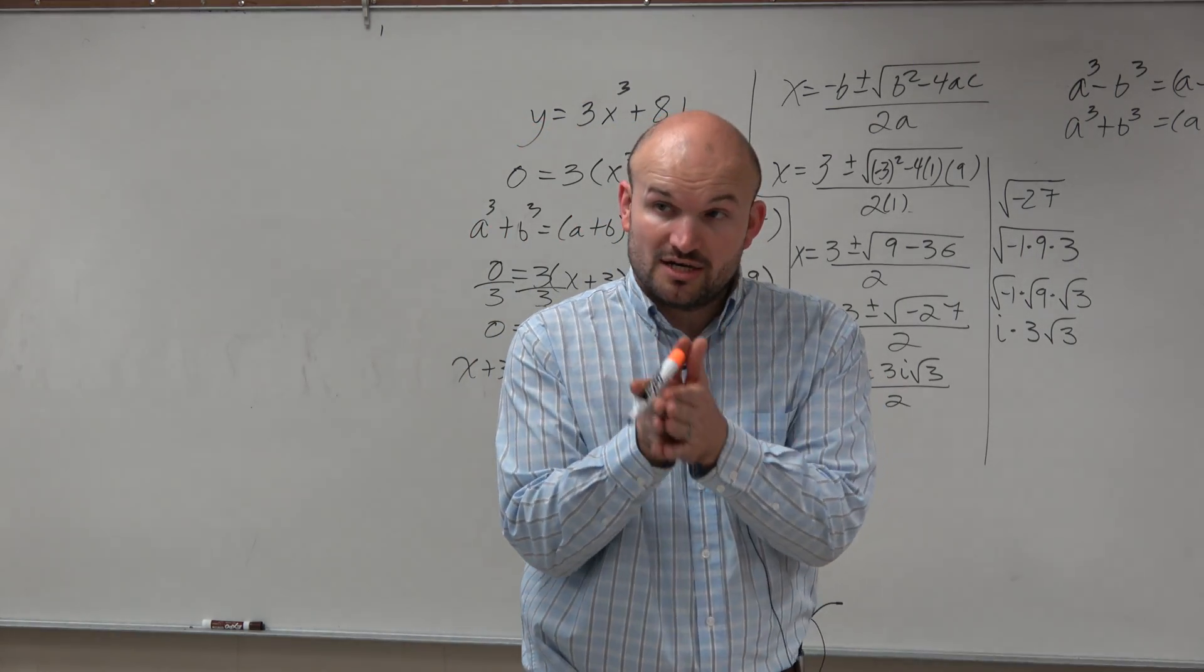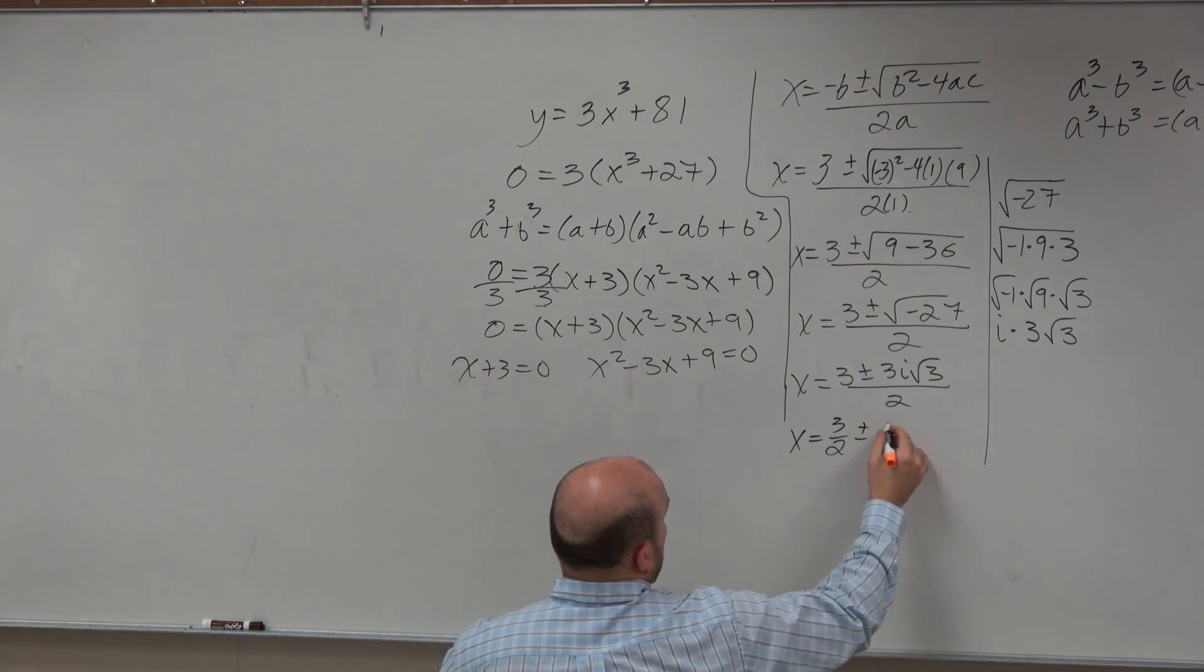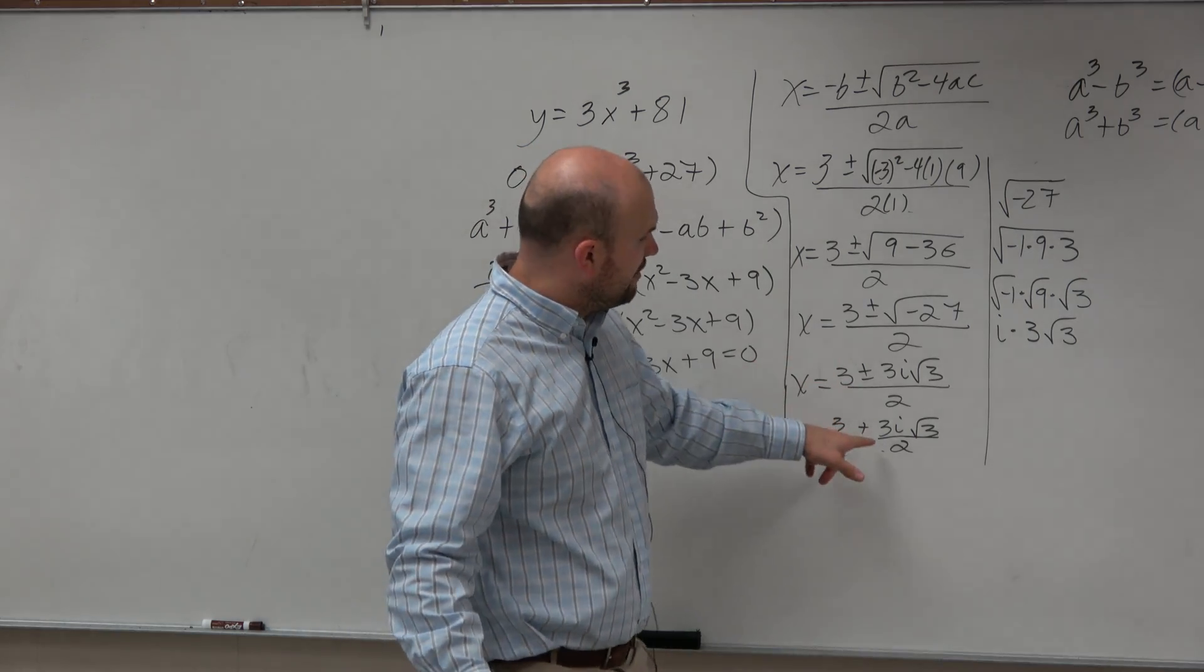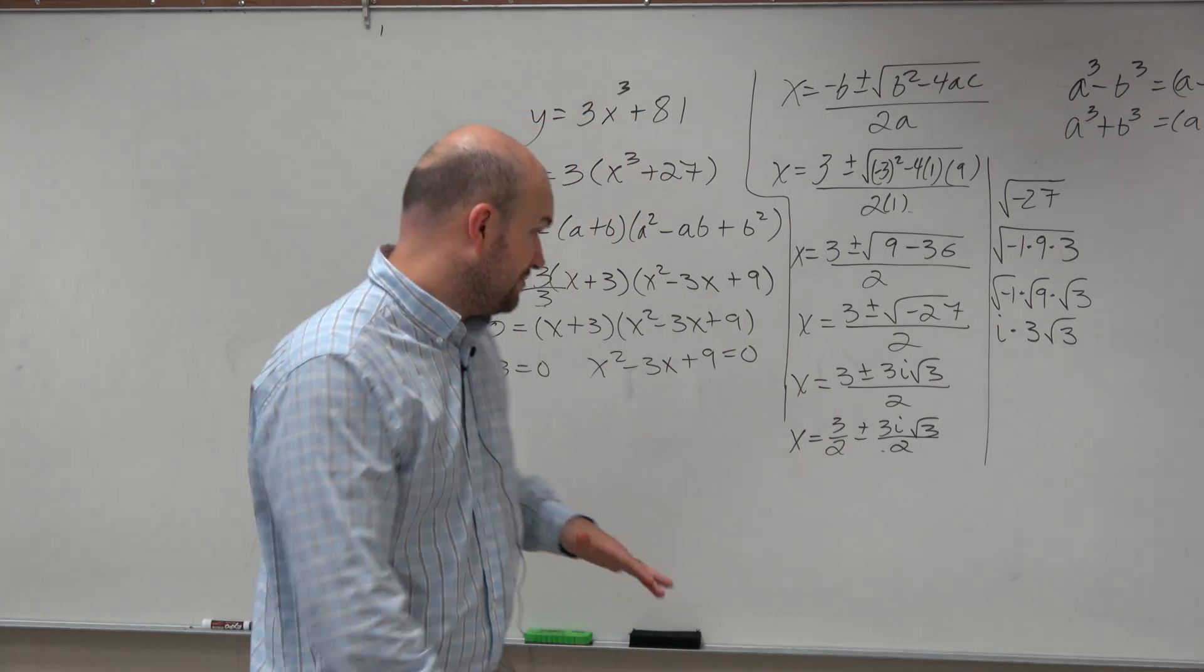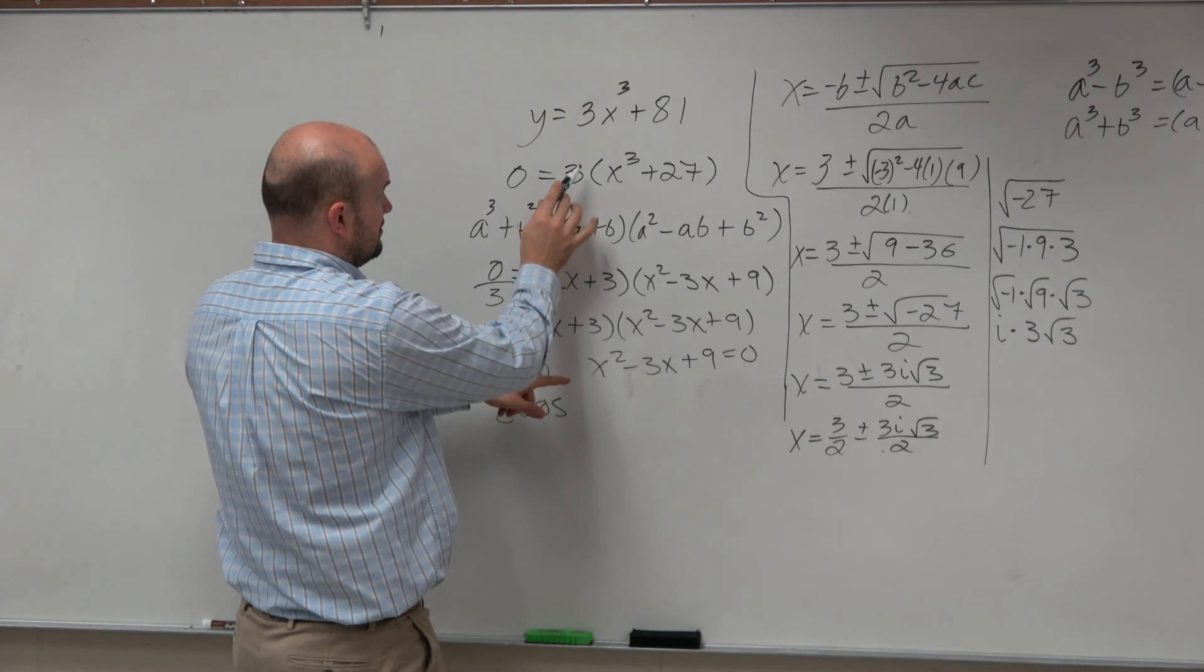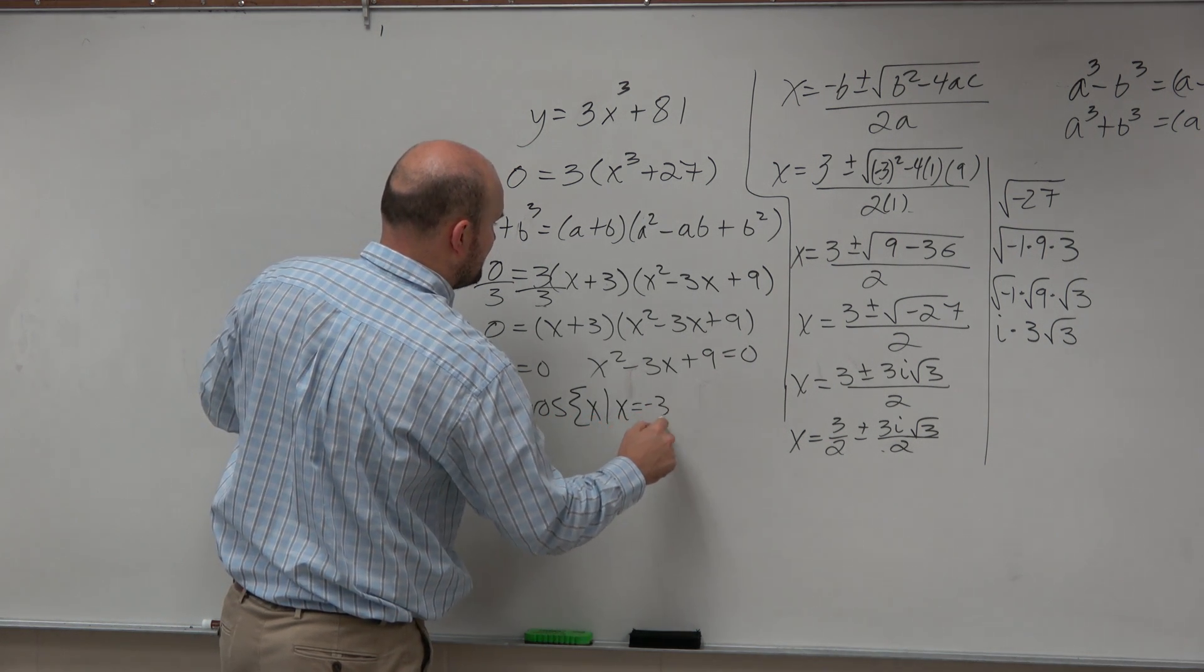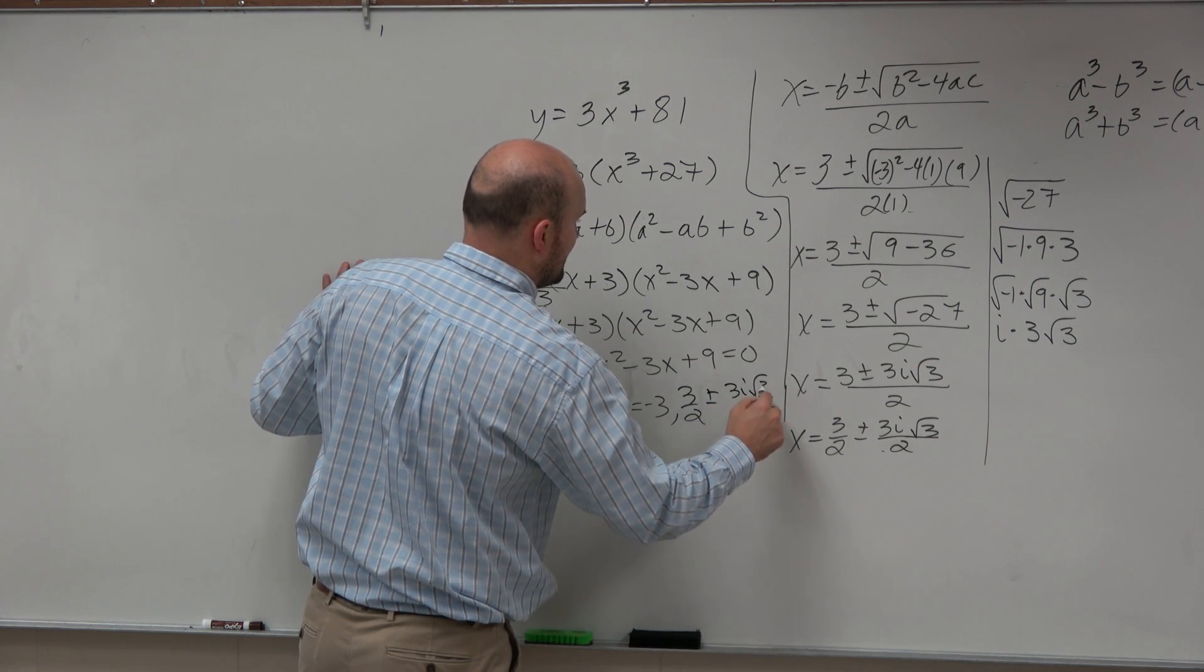So we'll have x equals 3 plus or minus 3i square root of 3 all over 2. Now you can also need to understand that 2 can be divided into both of these terms. Either one of those works, but the reason why we want to write it in this format is I'm about to show you guys what this would look like in linear factorization form. So the zeros are not that bad. The zeros are, we already know the zero is where? Negative 3. So we could say the zeros are x such that x equals negative 3 and 3 halves plus or minus 3i radical 3 over 2.